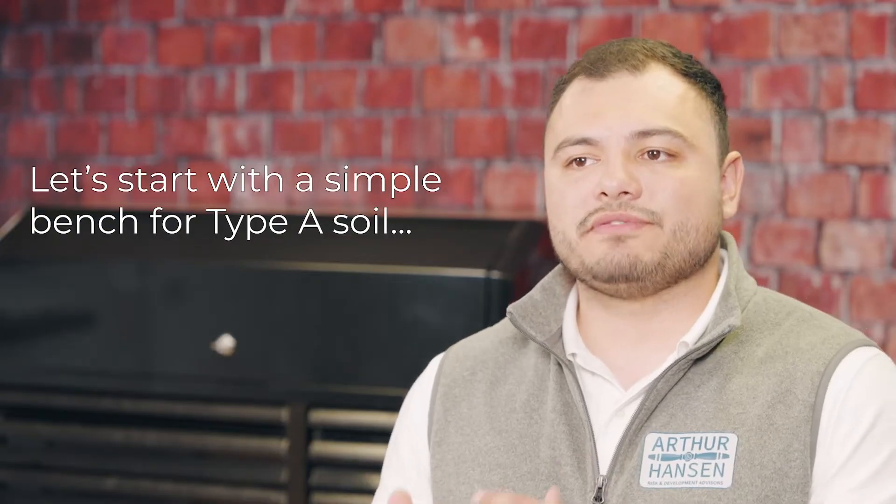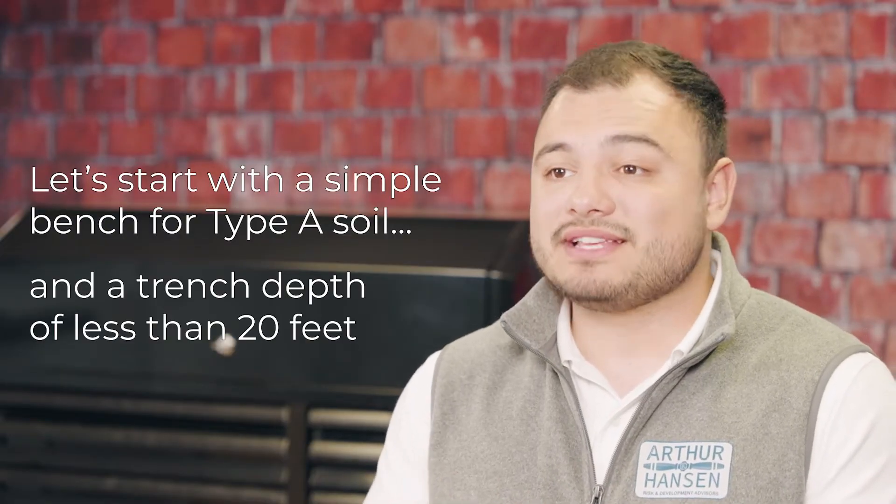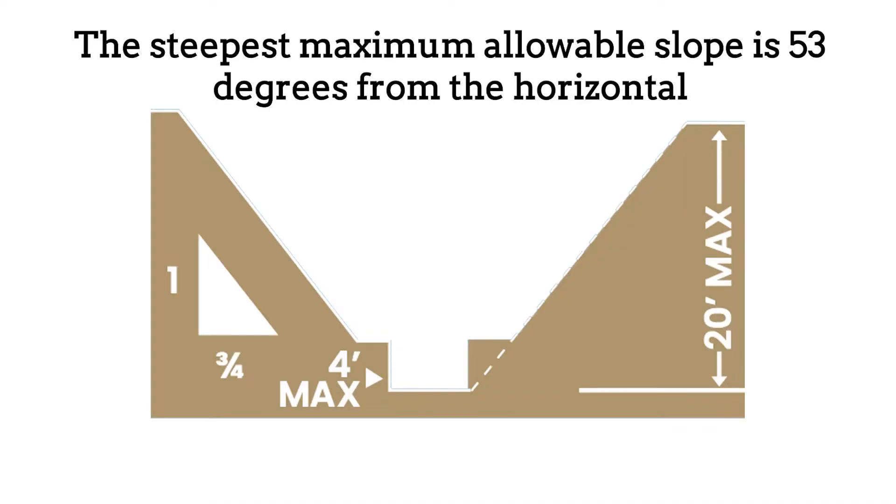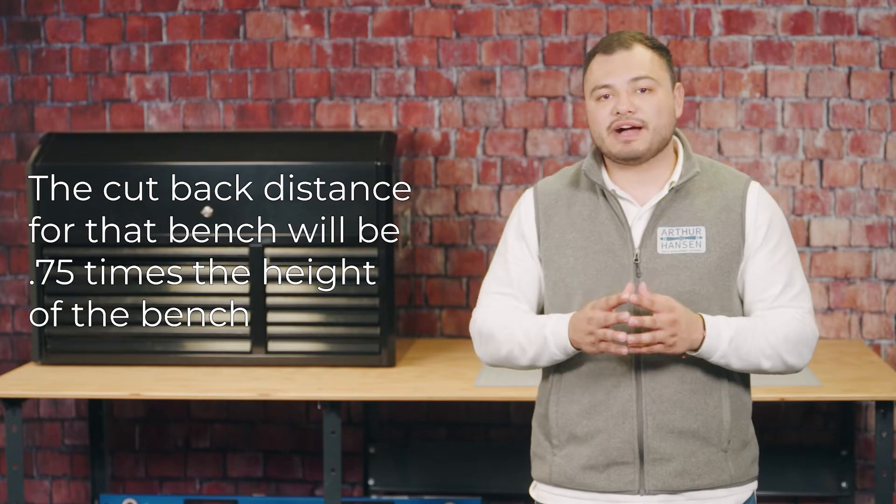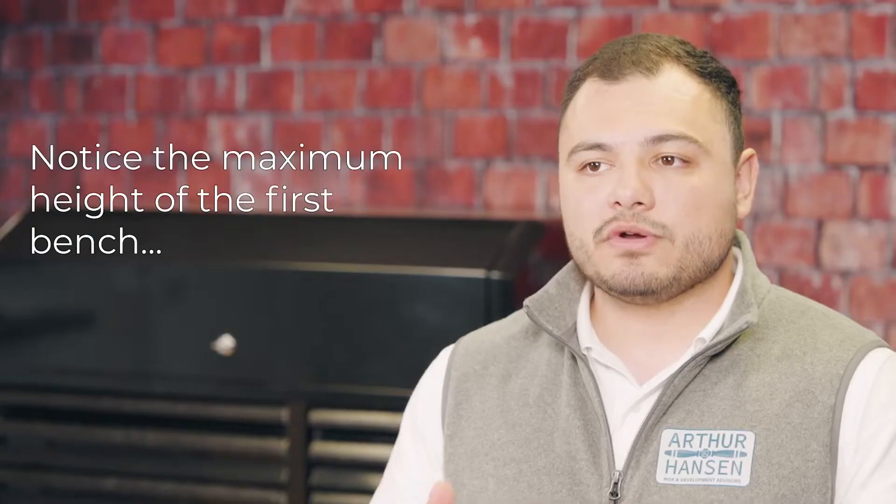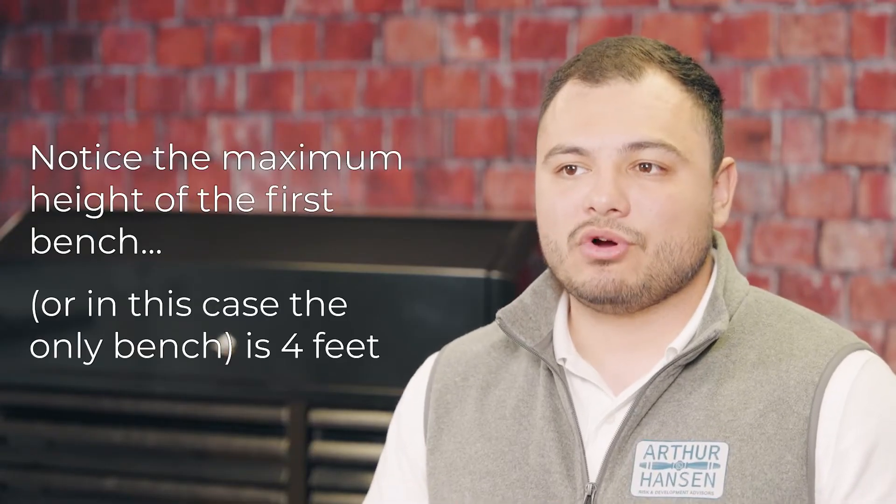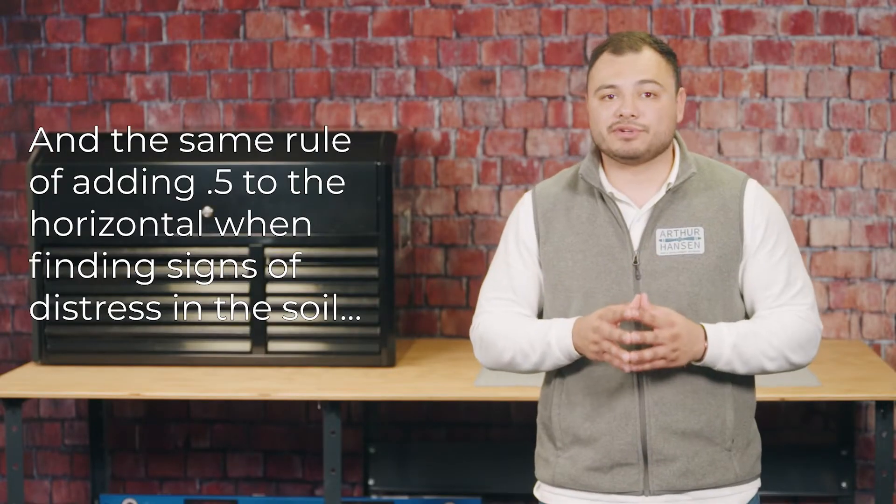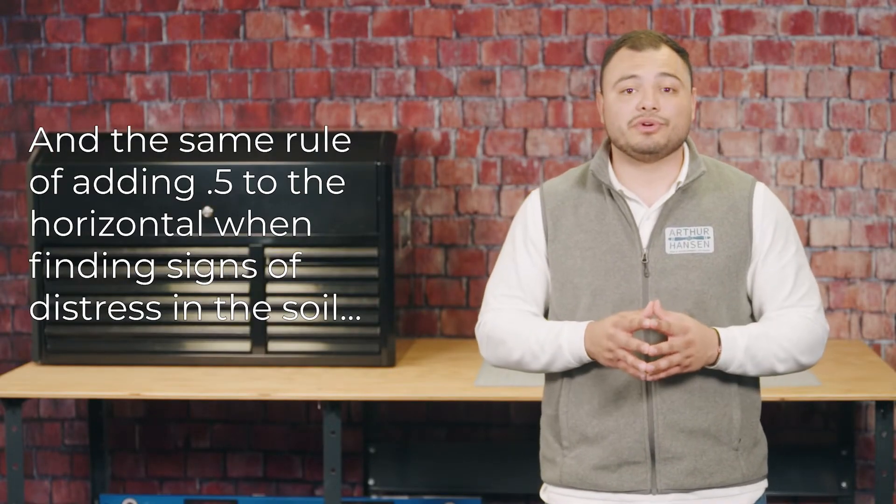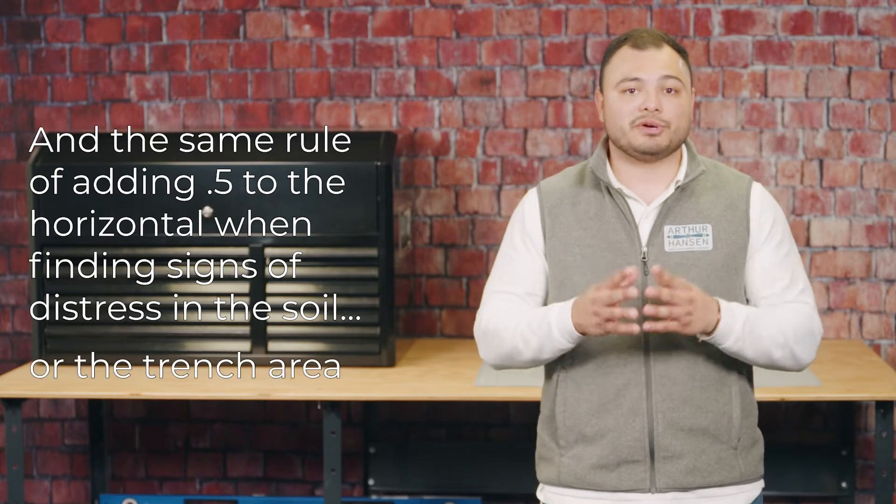Let's start with a simple bench for type A soil and a trench depth of less than 20 feet. The steepest maximum allowable slope is 53 degrees from the horizontal, or 0.75 horizontal to one vertical, showing on the screen now. The cutback distance from that bench will be 0.75 times the height of the bench. Notice the maximum height of the first bench, or in this case the only bench, is 4 feet.